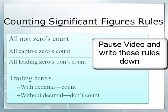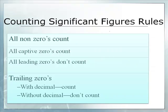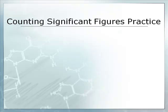All non-zeros count. All captive zeros count. All leading zeros don't count. Trailing zeros with a decimal count. Without a decimal, don't count. And we'll give you some examples. We're going to do nothing but examples to the end of this podcast.